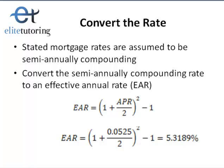Here's the formula to calculate the effective annual rate, or EAR, from a semi-annual compounding rate: EAR equals 1 plus the APR — which is the stated rate given — divided by 2, all to the power of 2, and then minus 1. Doing this calculation, we get an effective annual rate of 5.3189%.